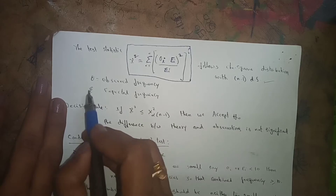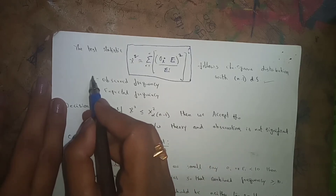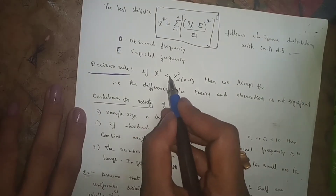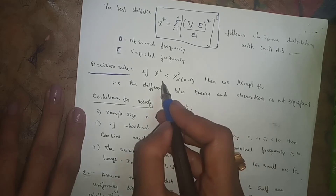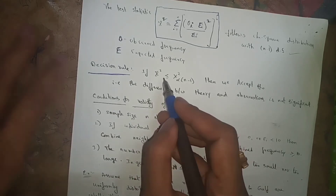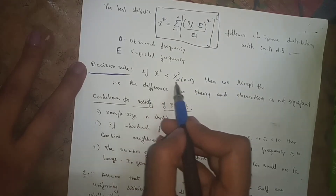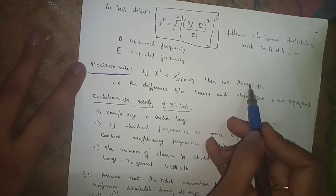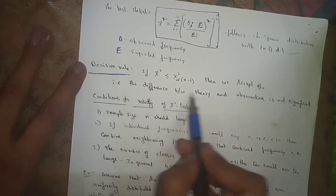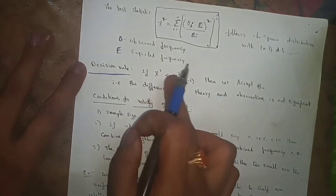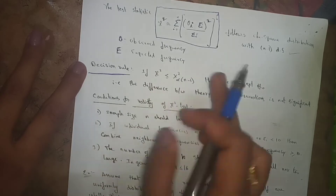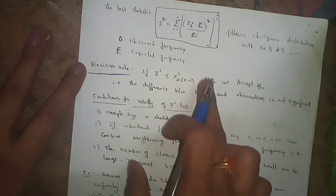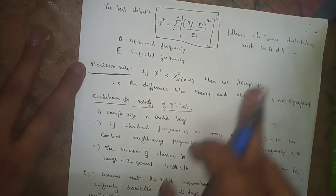The decision rule — very important: if chi-square calculated is less than or equal to chi-square table value at alpha level with (n minus 1) degrees of freedom, then we accept H₀. If chi-square calculated is greater than the table value, then we reject H₀. The meaning of accepting H₀ is that the difference between theory and observations is not significant.